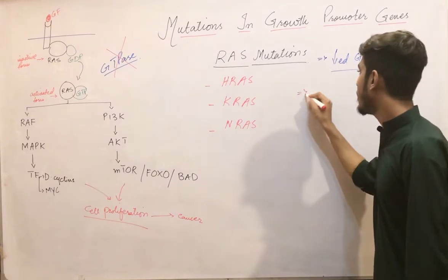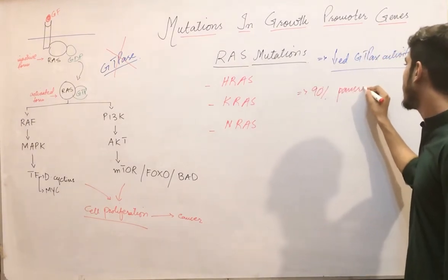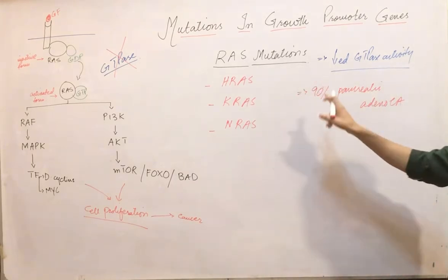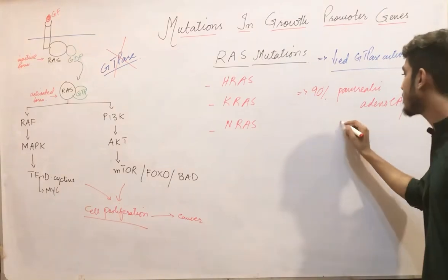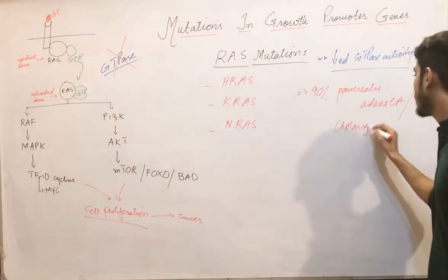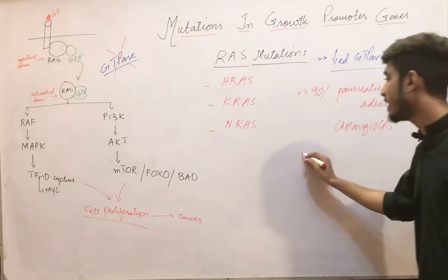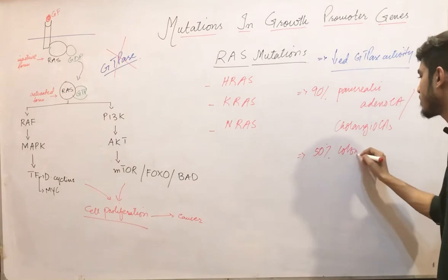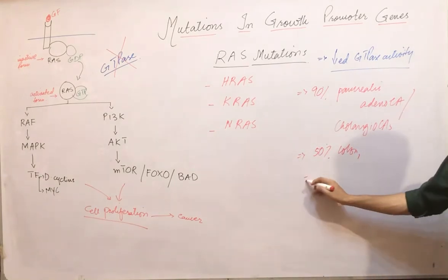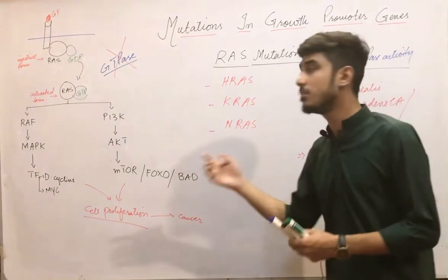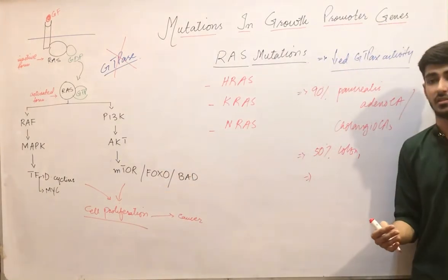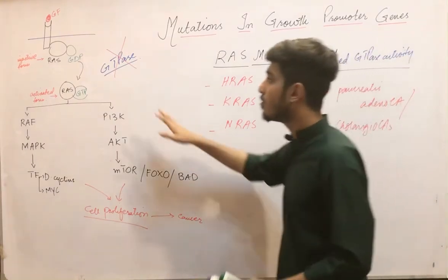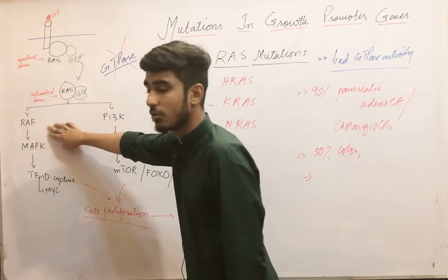RAS mutations are the most commonly mutated genes. They are seen in about 90% of pancreatic adenocarcinomas and cholangiocarcinomas, 50% of colon cancers and thyroid cancers, and 30% of lung cancers — making them very commonly mutated genes.